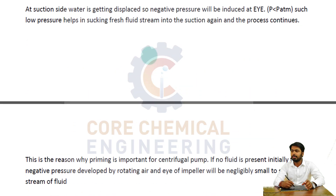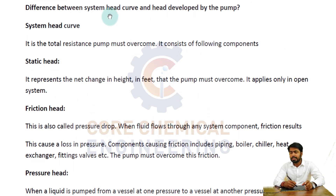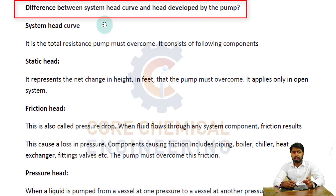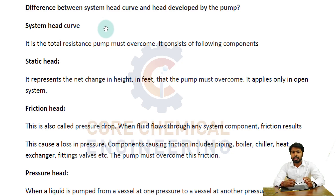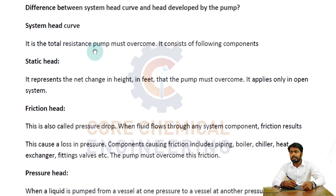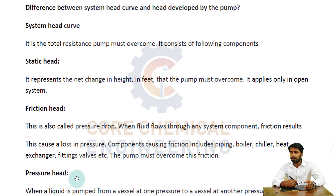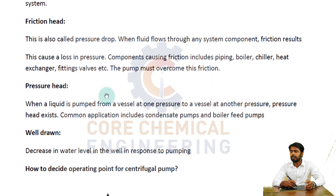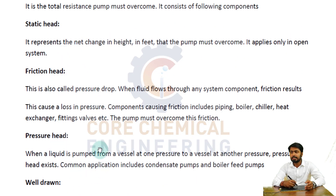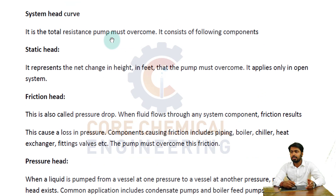Now we will discuss the difference between the system head curve and the head developed by the pump — these two are very important. The system head curve is the total resistance the pump must overcome. It consists of the following components: static head, friction head, pressure head, and well drawdown. These resistances are represented in terms of feet of head, and that is called the system head curve.